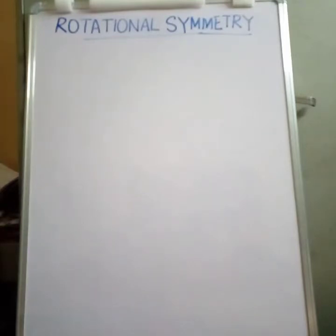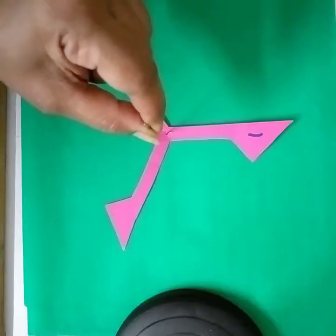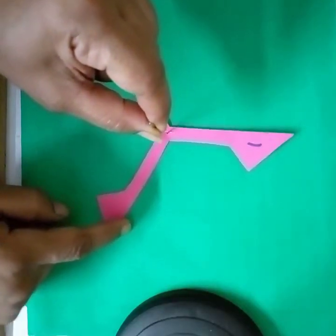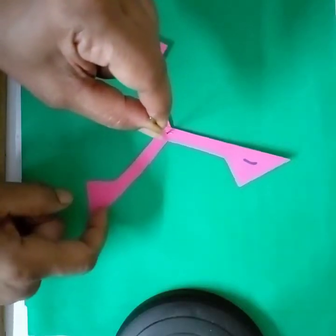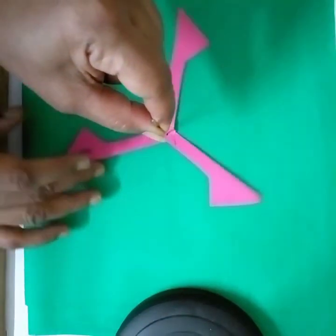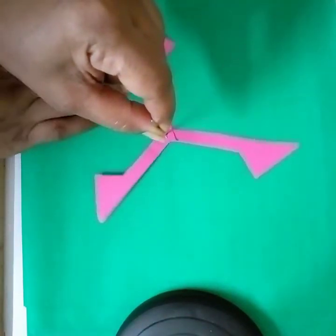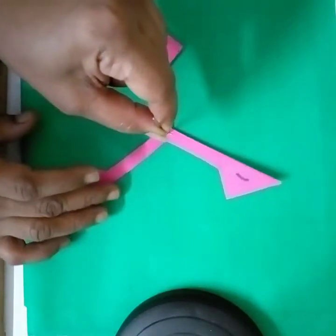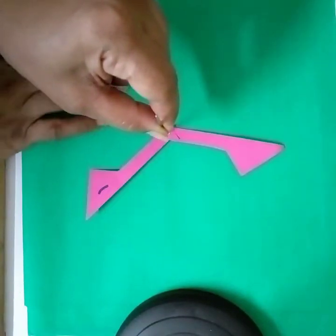Two-dimensional shapes are flat figures that have only length and breadth. In our daily life we see examples of rotation: the hands of a clock, wheels of a vehicle, and fans rotating about a point.